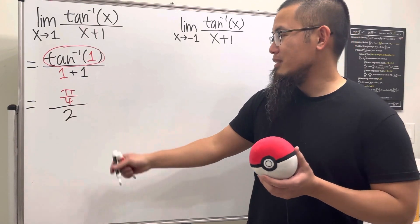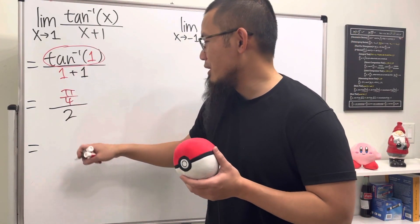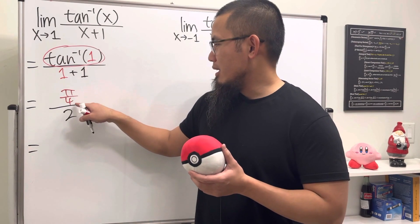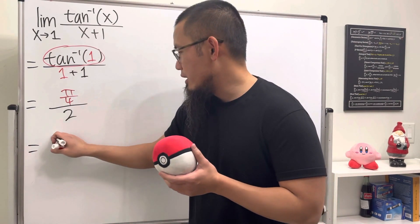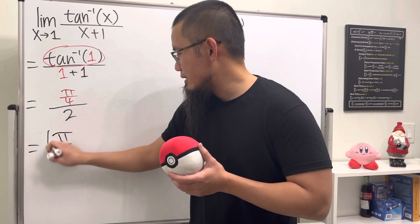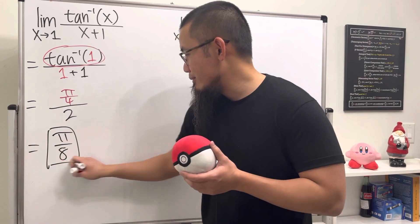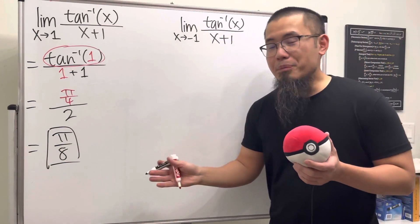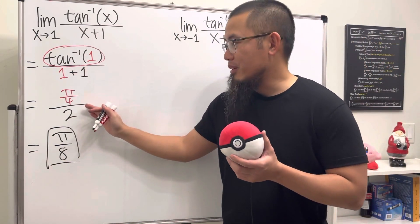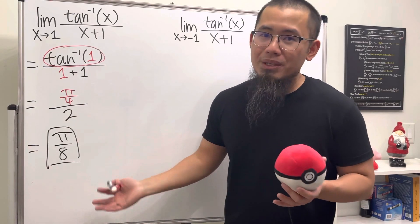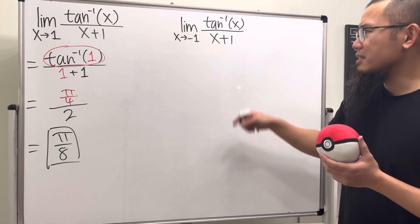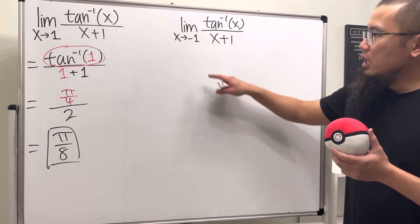We can simplify by multiplying the four and two together on the bottom, giving us π/8. That's our answer for the first limit. Now for the second one, if we plug in negative one for x, things get more complicated.